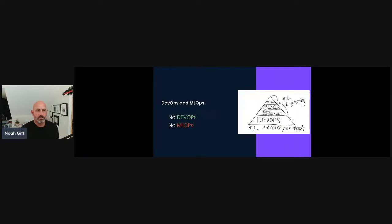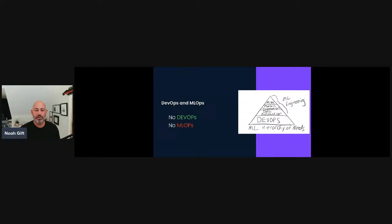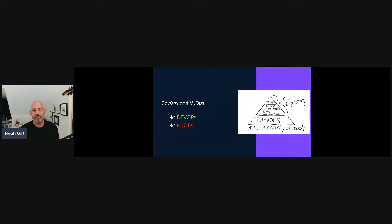One of the most misunderstood things about operationalizing machine learning is that you cannot do MLOps if you don't have DevOps. DevOps is about automating things at scale and continuous improvement — making things better on a daily or incremental basis. If you're going to implement machine learning in your organization and you don't have DevOps, you should stop and implement DevOps first. I wrote a book for O'Reilly called Python for DevOps that covers testing, continuous integration, infrastructure as code, and continuous delivery — all foundational for MLOps.